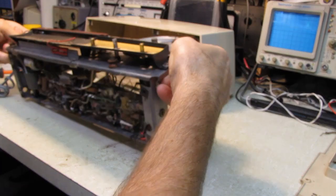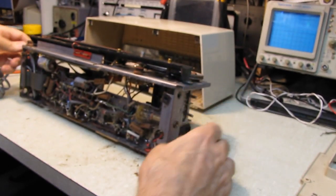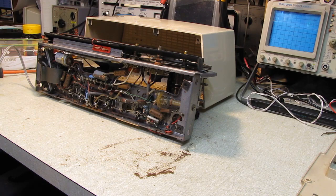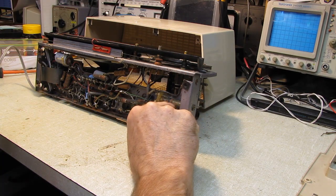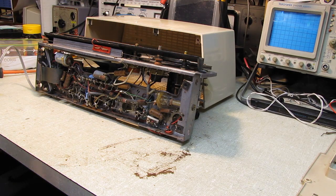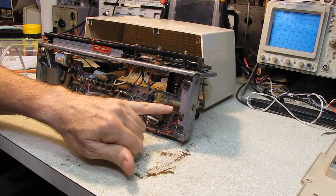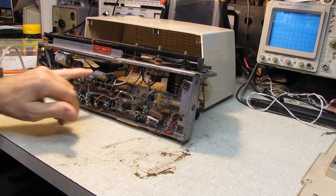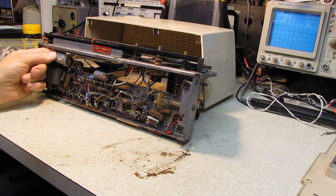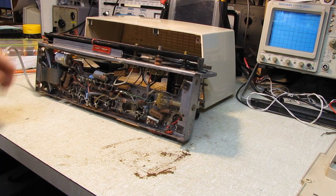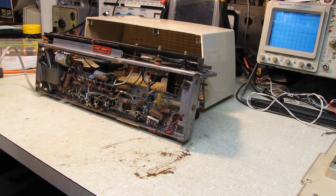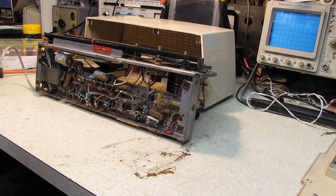Now what's underneath? Aha! Lots of nice waxy paper caps. What I'm going to assume is the oscillator coil. I haven't looked at the schematic yet. Filter capacitor that is leaking so that'll have to be changed right away. It's spewing its insides out over here.